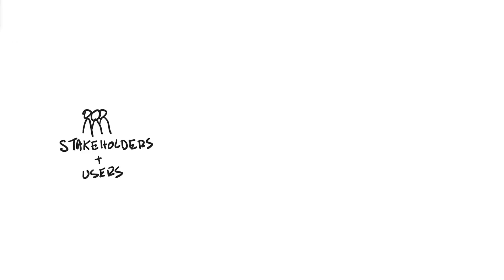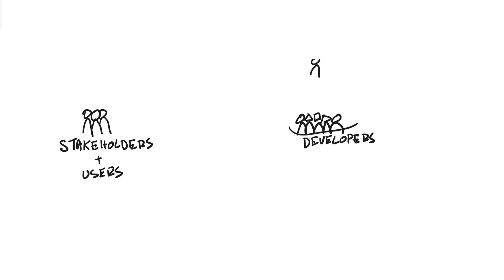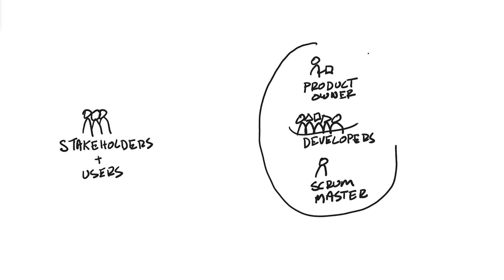The Sprint Review is a working session for the stakeholders, users, and customers to collaborate with the Scrum team, which includes the developers, product owner, and Scrum Master, and inspect the progress made toward the product goal based on the latest product increment.